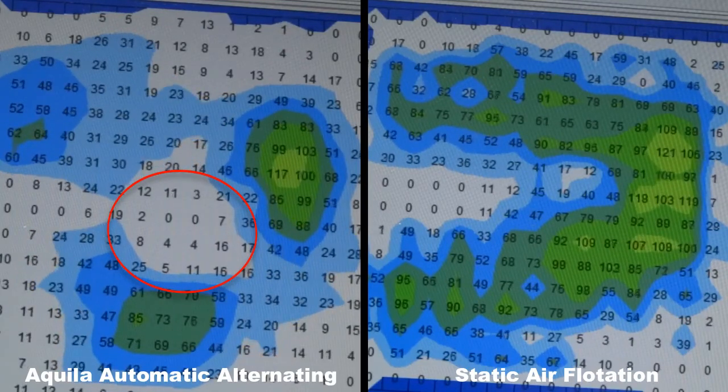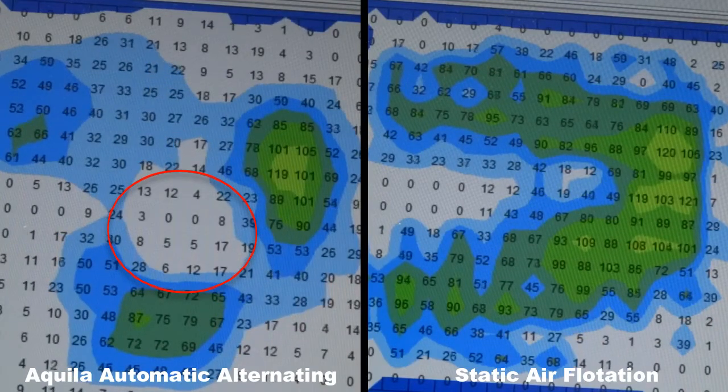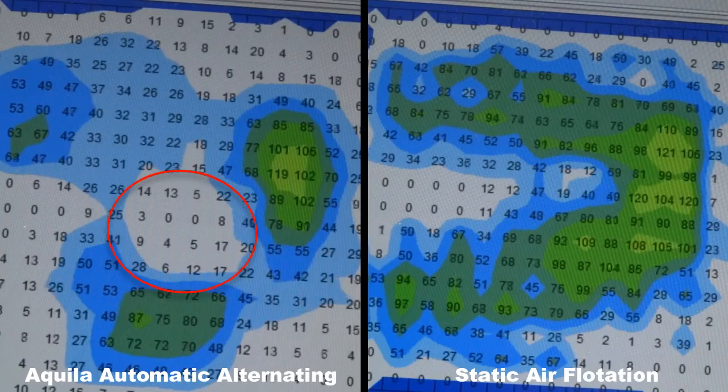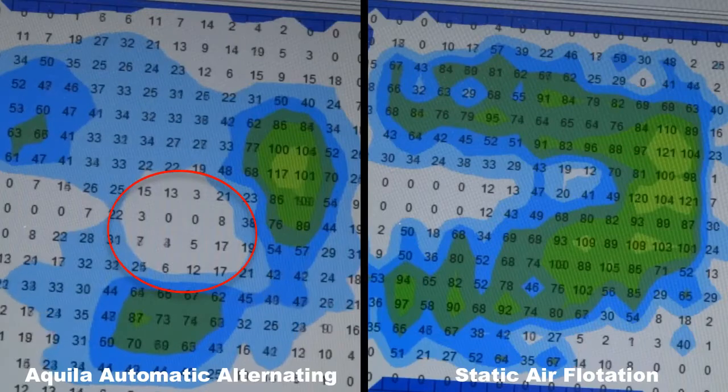On the right, a commonly used static air flotation cushion. The static cushion is motionless. To understand the differences, the Soft-Tack cushion is a dynamic cushion. This means the cushion creates movement on its own.